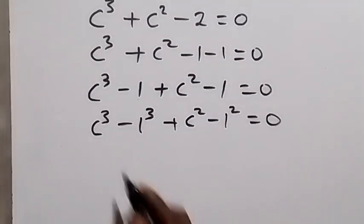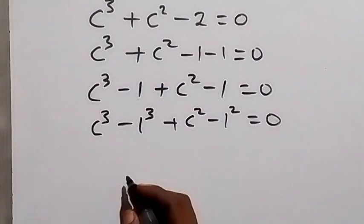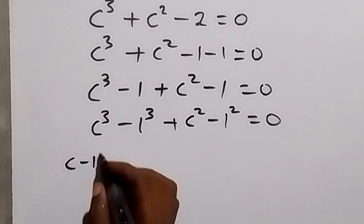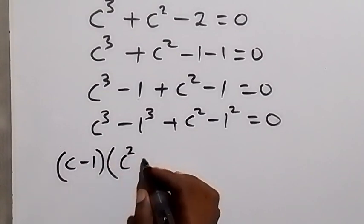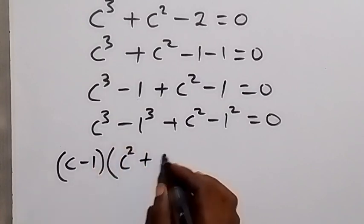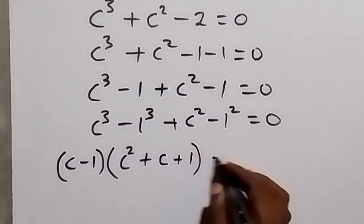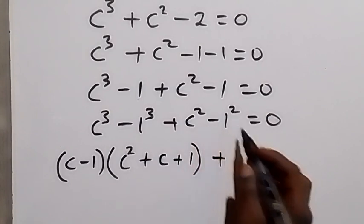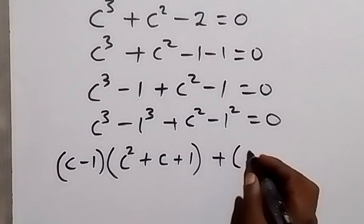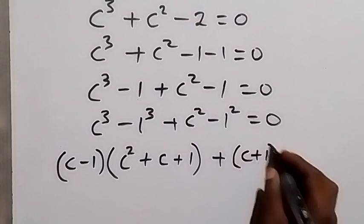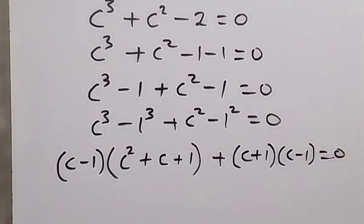This follows from the difference of two cubes, so we can rewrite c cubed minus 1 as (c minus 1) multiplied by (c squared plus c plus 1). Then c squared minus 1 squared can also be written from the difference of two squares as (c plus 1) multiplied by (c minus 1), all equal to 0.